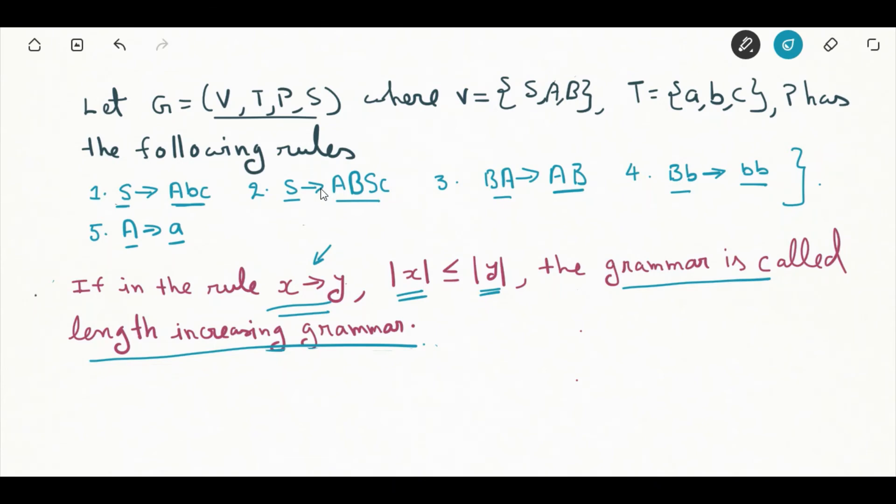Further if this production is included and x and y belong to positive closure of V union T, then this condition also holds and x and y belong to positive closure of V union T, then we are going to say that that is context-sensitive grammar. So length increasing property is also holding in context-sensitive grammar.